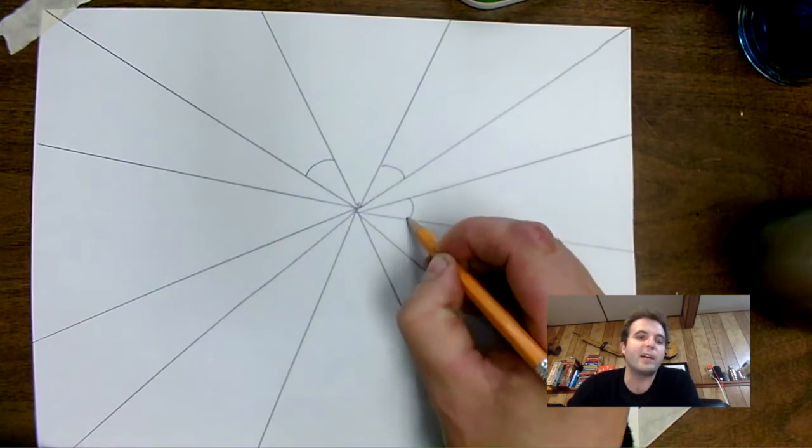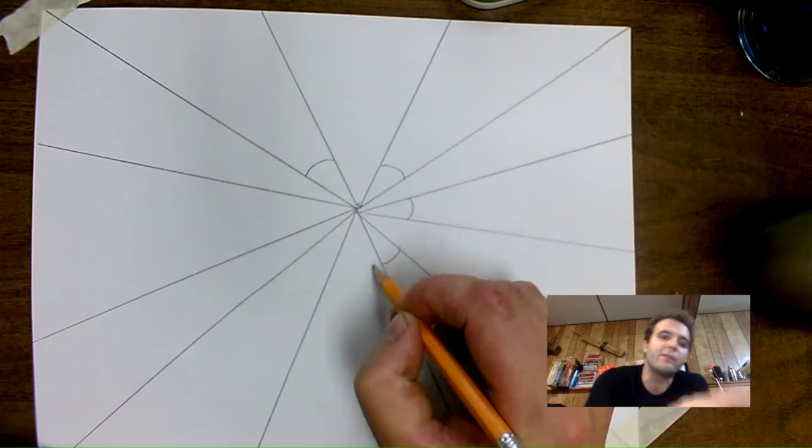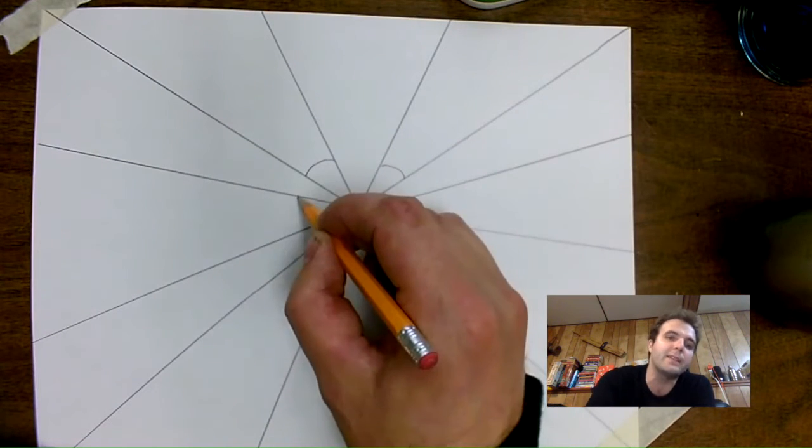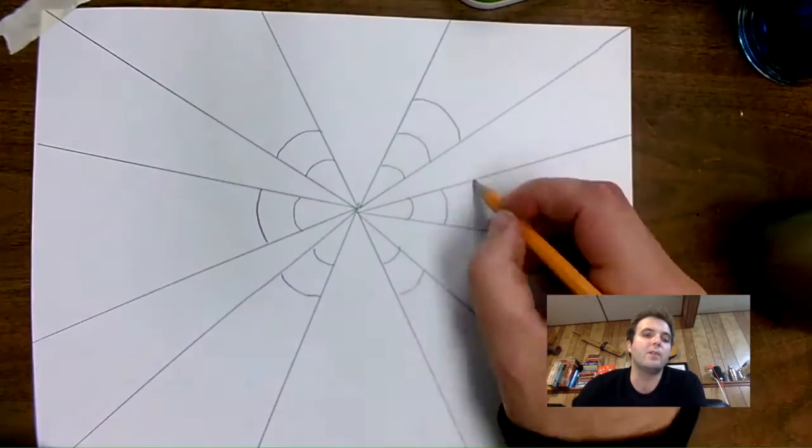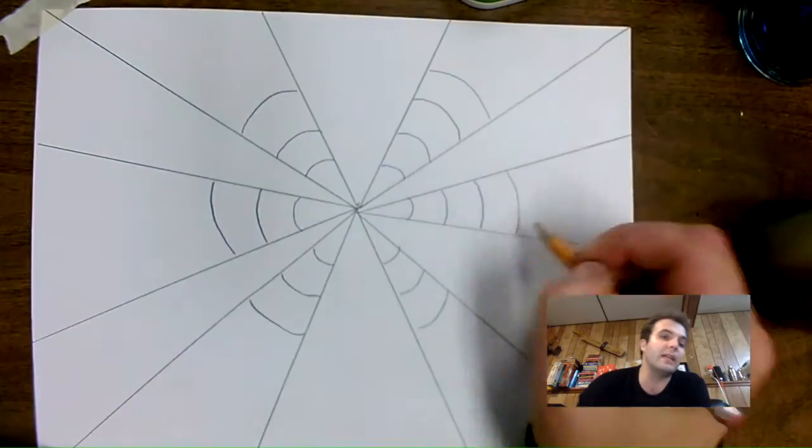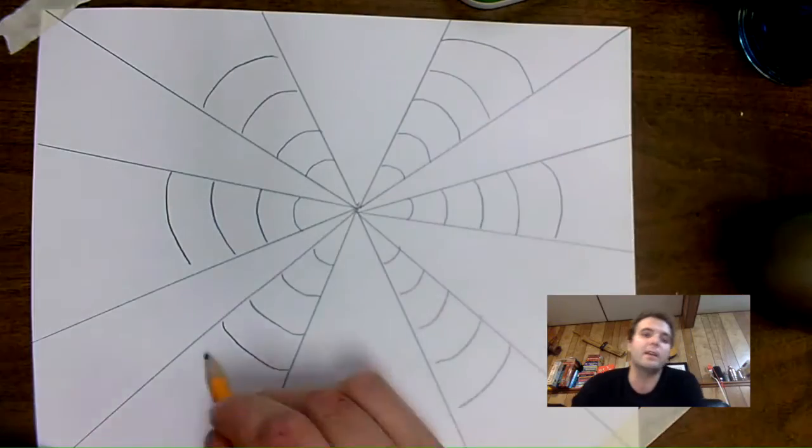Next, you're going to be creating kind of like frowny faces that alternate. You have a frowny face, you leave a space, frowny face, leave a space, frowny face, leave a space there. And you're going to take those all the way up. Make sure you leave a space in between each of those sections.